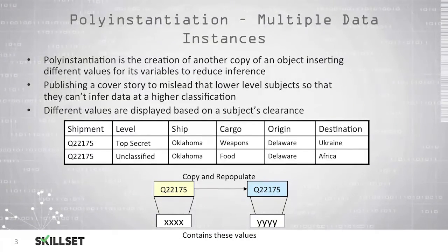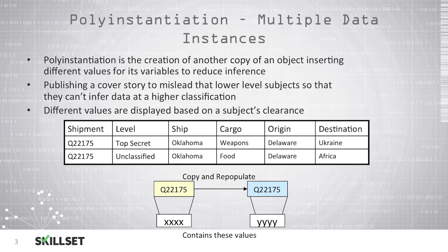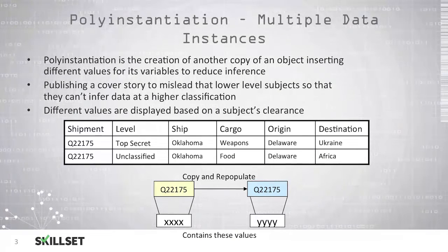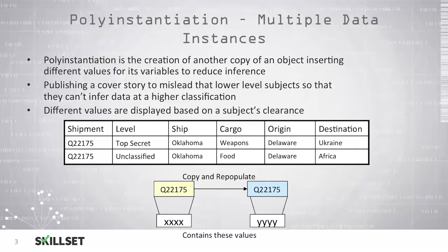For example, we see at the bottom here in the table that we have two records for the same shipment, Q22175. If the person requesting the information is unclassified, they will see that this shipment contains food and it is destined for Africa. But if they have top-secret clearance, they will be able to see the true information about the shipment, that it contains weapons and is destined for the Ukraine.